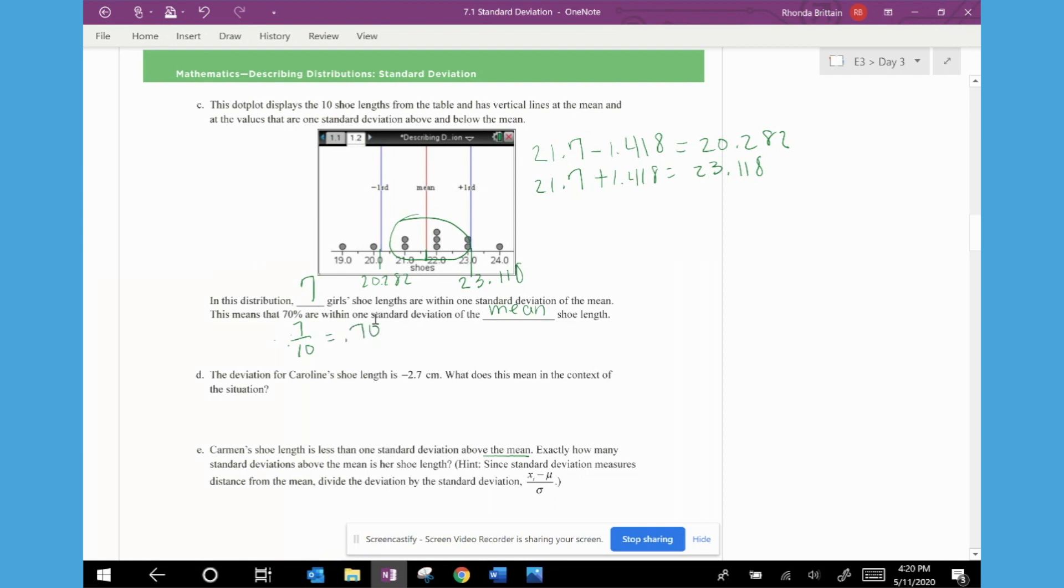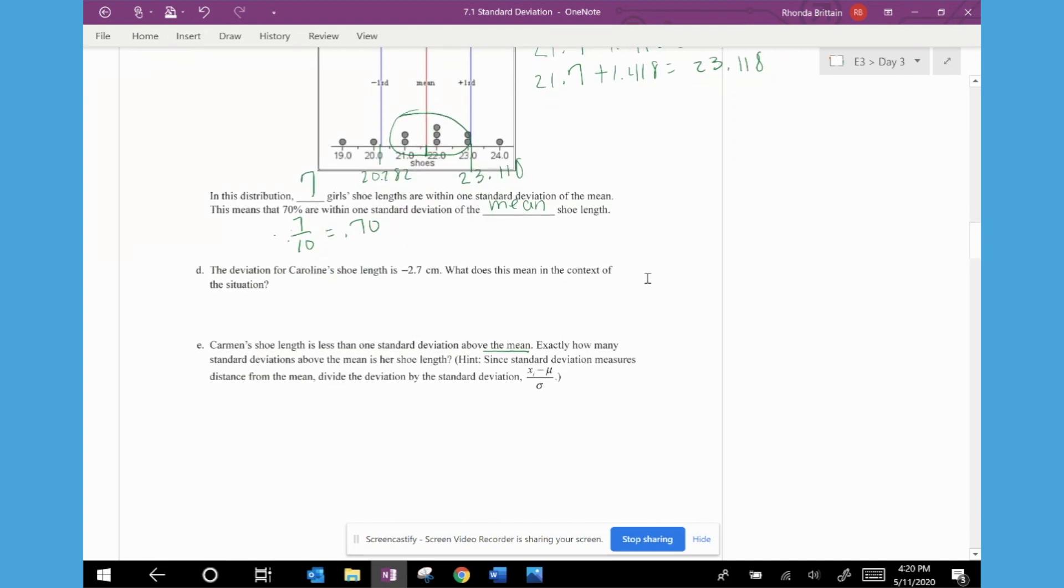On part D, it says that the deviation for Caroline's shoe length is negative 2.7 centimeters. So we calculated that on page one. And that just really means that in context that her shoe length is shorter than average.